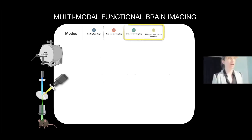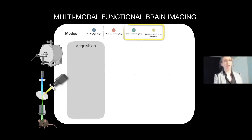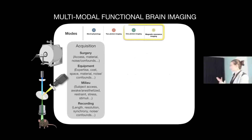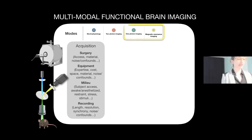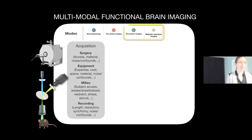Now I'll narrow to the modalities I work with most frequently: simultaneous one-photon imaging and MRI. When doing any acquisition, you start with actually collecting the data. For an optical imaging setup, you need surgery — you need optical access to the tissue. You also need to consider equipment, expertise across modalities, materials, noise confounds, milieu, and your recording parameters: spatial-temporal resolution and data synchronization.